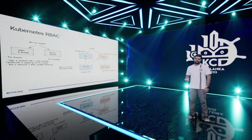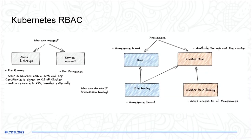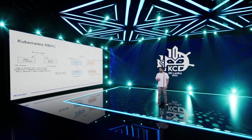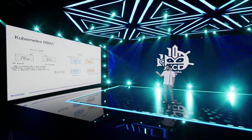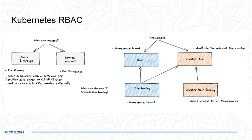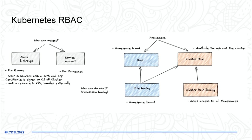In Kubernetes we have two types of identities: users and service accounts. Users are for humans — they have a cert and key signed by the cluster's certificate authority, managed externally. Service accounts are for processes: when a pod, worker node, or CRD needs to talk to the Kubernetes API, it uses a service account. For permissions, we have roles — namespace-scoped — and cluster roles, which are global across all namespaces.